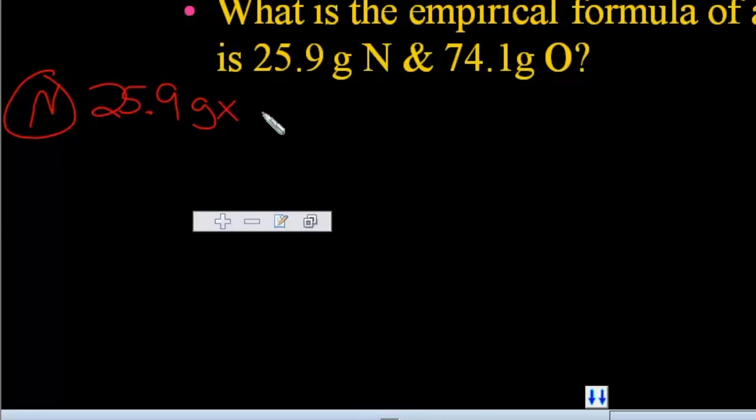The first step was take the grams and convert it to moles. So you've got grams on top, so you've got to put grams on the bottom, and it would be the molar mass of nitrogen, and one mole on top, so that cancels your grams. And then you've got your answer, 1.85.